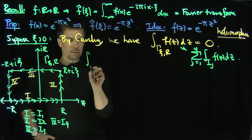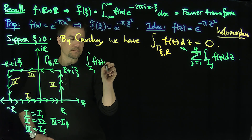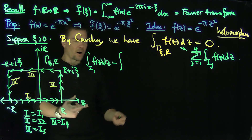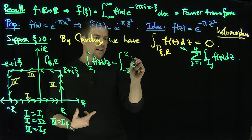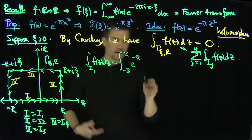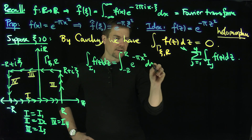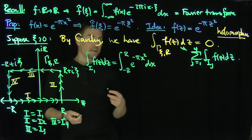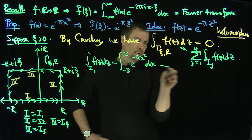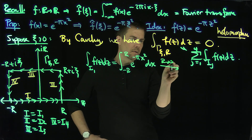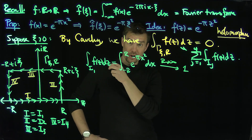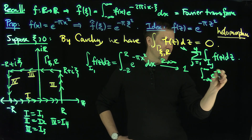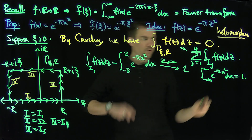Piece I₁ is the easiest. I can parameterize it since we're going from −R to R along the real axis, so I₁ = ∫_{-R}^{R} e^{-πx²} dx. As R → ∞, this tends to 1 — that's just the Gaussian integral: ∫_{-∞}^{∞} e^{-πx²} dx = 1, which we proved in calculus.